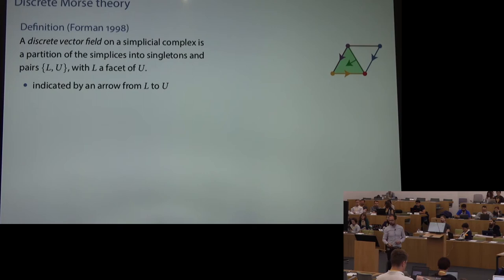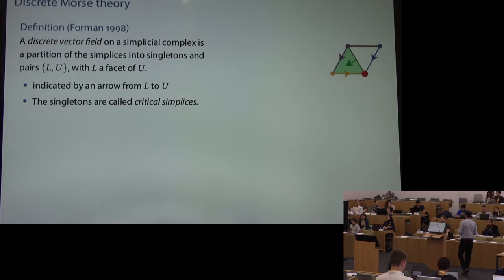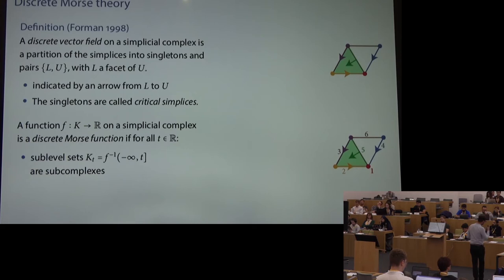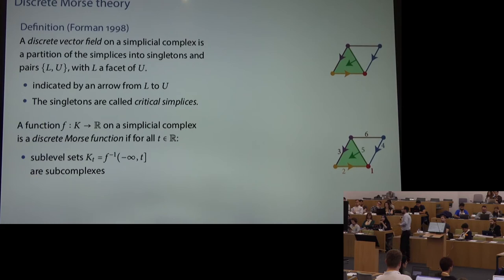There are four such pairs illustrated by arrows, and two unpaired simplices: a red vertex on the bottom and a brown edge on top. Those are the critical simplices — they correspond to critical points of a vector field in the smooth world. A gradient is a vector field defined from a function: we assign a function value to each simplex (not just vertices). Pairs of simplices can share the same value.